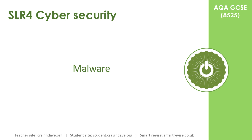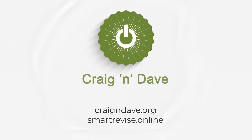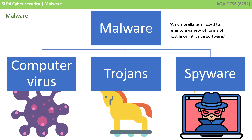In this video we look at the following cyber security threat: malware. Malware is a catch-all umbrella term used to refer to a variety of forms of hostile or intrusive software. There are many types, and the three you need to know about for the exam are computer viruses, trojans, and spyware. Let's take a look at each in a little more detail.